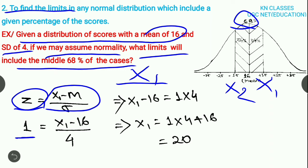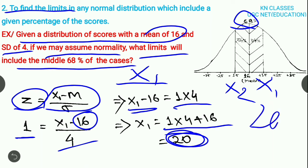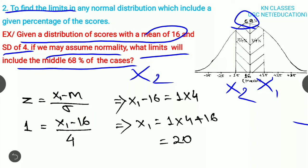So 1 equals X1 minus 16 divided by 4. Then 4 will multiply with 1, so X1 minus 16 equals 1 times 4. Then X1 equals 4 plus 16, which equals 20. The value of X1 is 20.